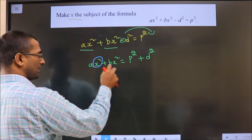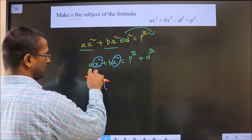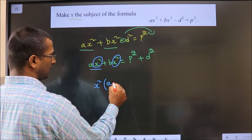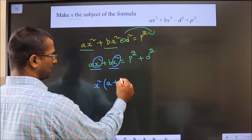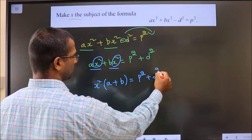Take this x square common. So from here x square went out leaving you with a. Here x square went out leaving you with b equals p square plus d square.